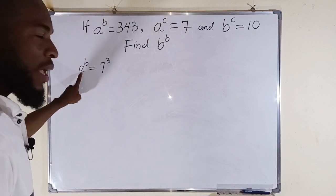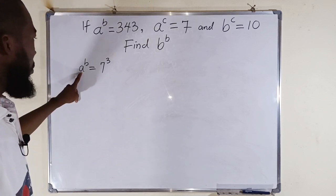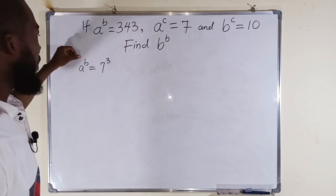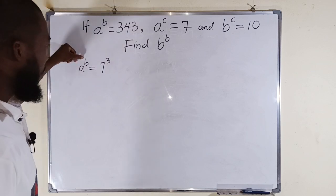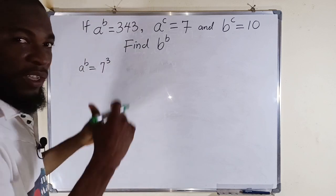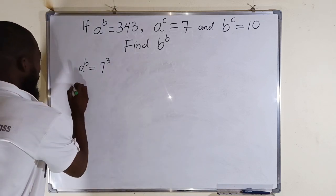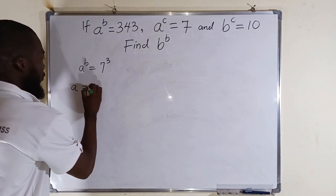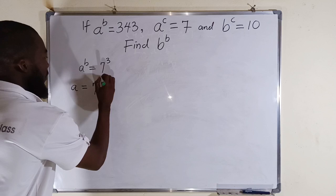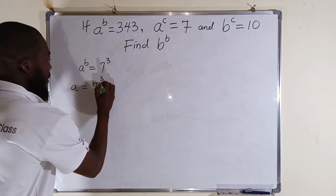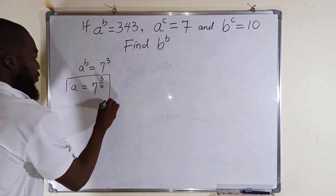How can we make a the subject from here? By multiplying both exponents by the reciprocal of b, meaning we are going to divide both exponents by b. So a from here will be equal to 7 to the power of 3 divided by b. One important equation.